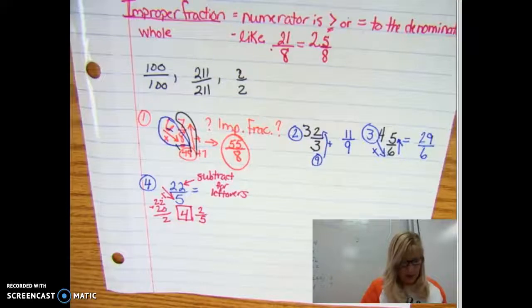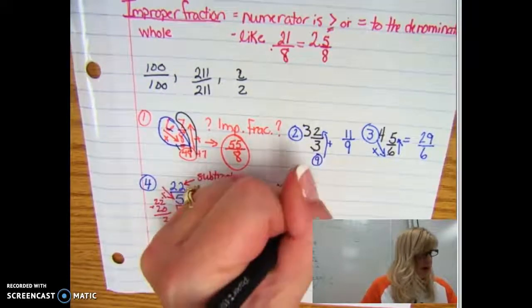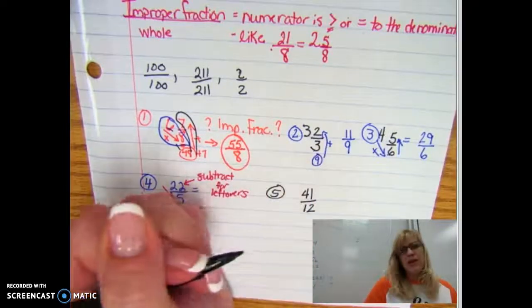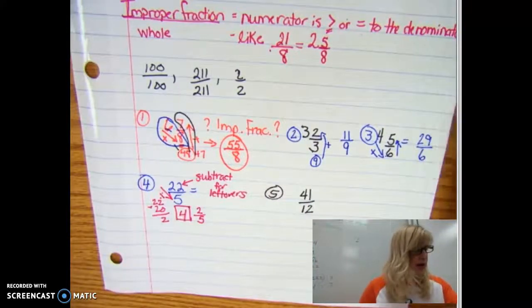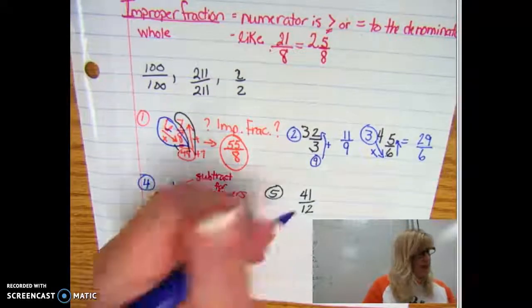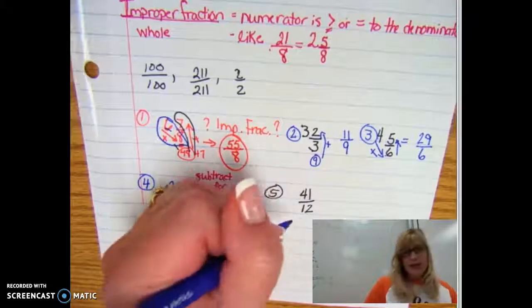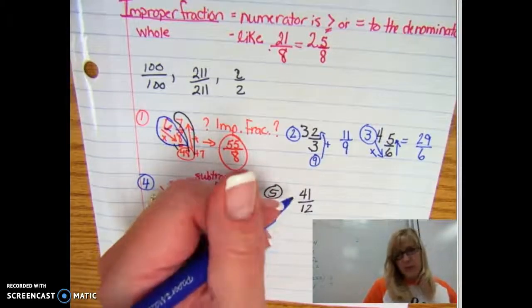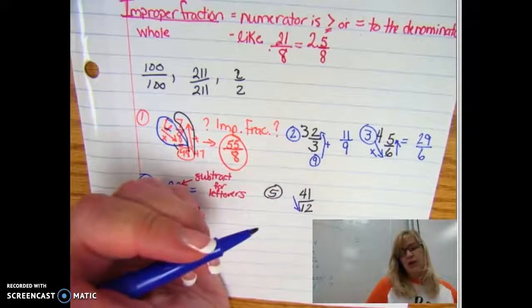Let's look at 41 over 12. That one looks a little bit more ominous, meaning a little bit scarier numbers. But if we just simply look at, okay I have 41 pieces and it's going to take 12 pieces to put back together, put Humpty Dumpty back together again to make a whole. So how many 12s are there in 41? Well I know if I skip count, 12, 24, 36, I can get three 12s, that's three wholes.